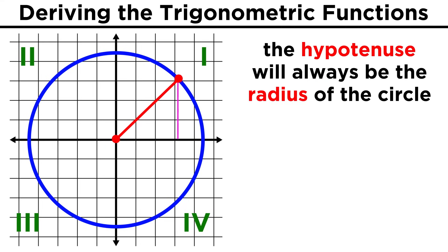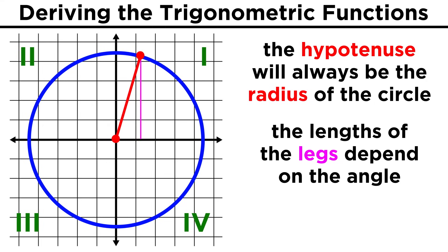Otherwise, let's observe that as this angle grows, the hypotenuse is always the same, as it's the radius of the circle, but the lengths of the legs change in a way that depends on the angle.